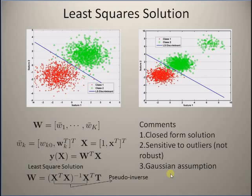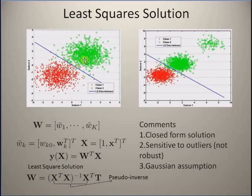Another major problem is that the error or uncertainty is assumed to follow a normal distribution, that is a Gaussian distribution. In these plots you can see that the least squares solution gives a very good result when the data points from class one and class two follow the normal distribution. Class one is represented by red crosses and class two by green circles, and the blue line is the least squares discriminant, which looks like a rather good solution.